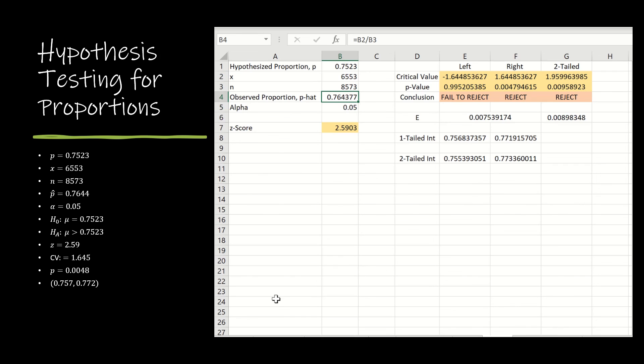Once we have Excel set up correctly, which we did in the last question for left and right tail, all I had to do was enter in a few pieces of information to find the z-score, to find the right critical value, to find the p-value, and to know that we should in fact be rejecting the null. And of course, then I have my one-tailed interval as well.